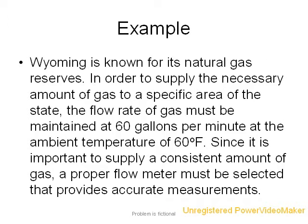Here is an example problem. Wyoming is known for its natural gas reserves. In order to supply the necessary amount of gas to a specific area of the state, the flow rate of gas must be maintained at 60 gallons per minute at the ambient temperature of 60 degrees Fahrenheit. Since it is important to supply a consistent amount of gas, a proper flow meter must be selected that provides accurate measurements.